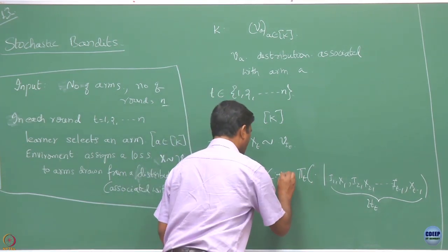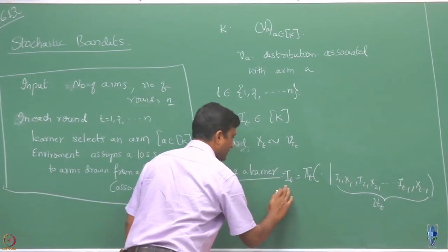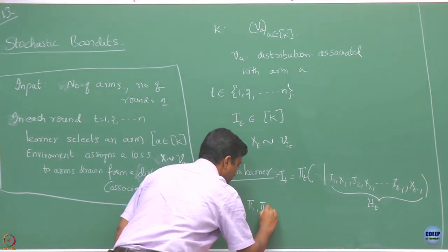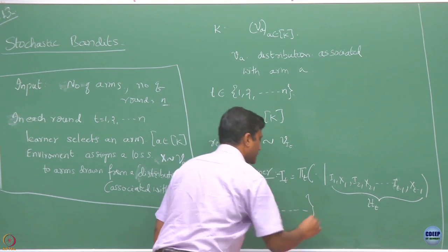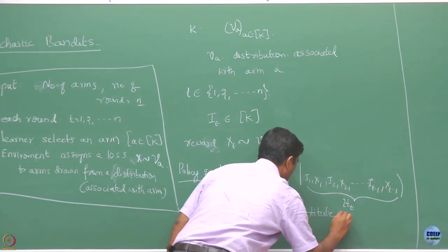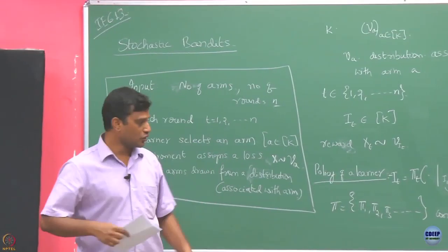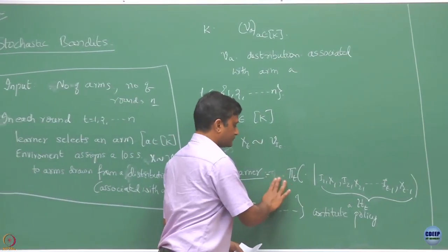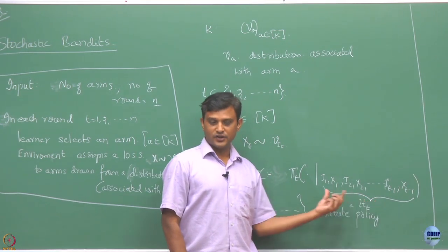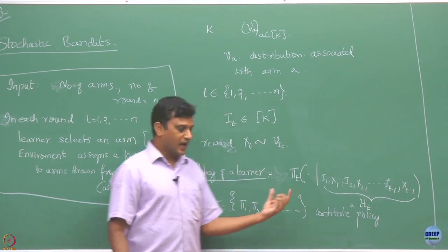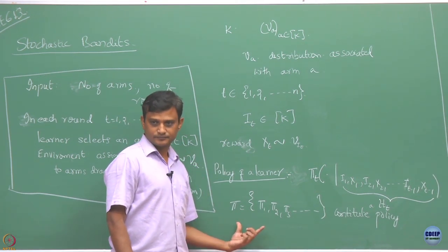So I_T comes from this history, and in round T the sequence of pi_1, pi_2, pi_3, and so on constitutes the policy. These are basically rules: if you tell me what I have observed so far, the policy tells you what action to play in every round. This collection of all these rules in every round is your policy.